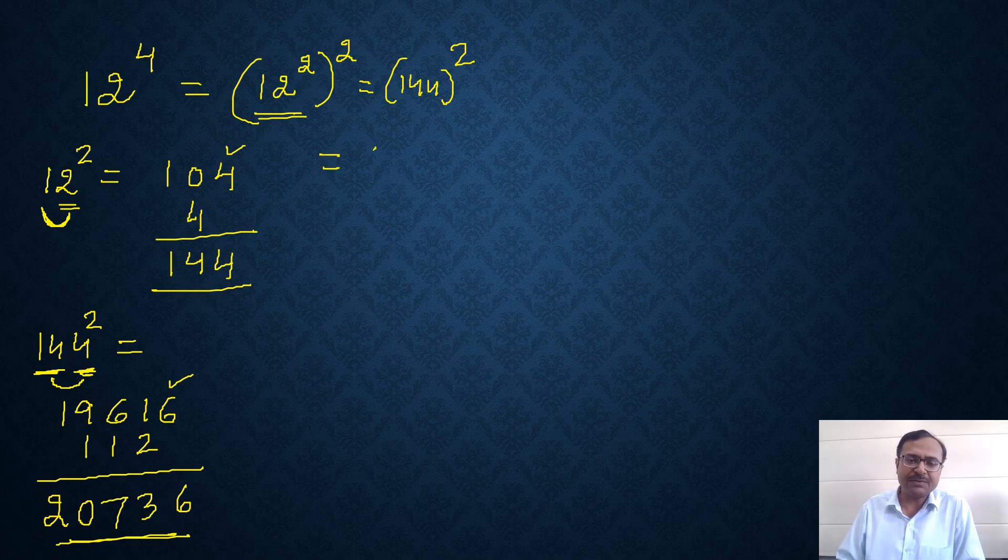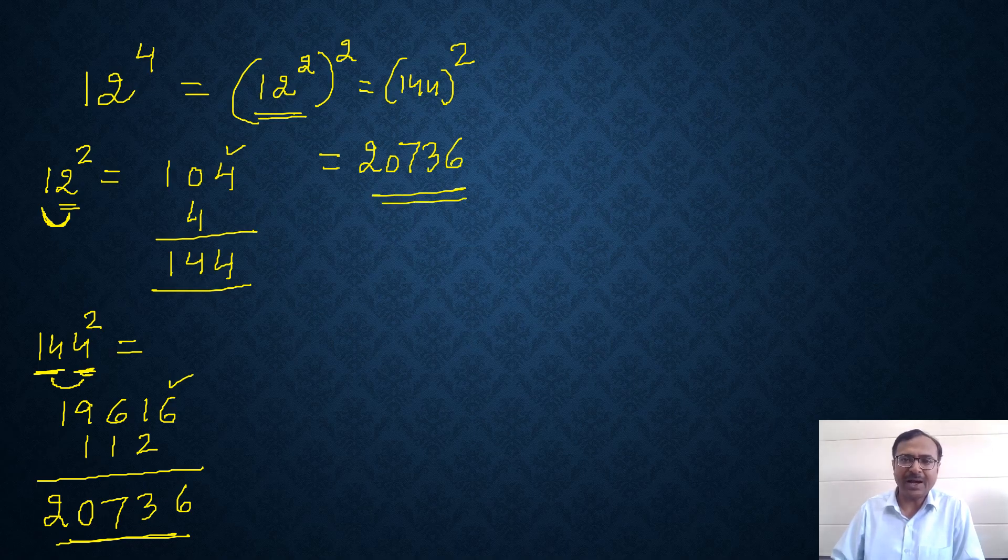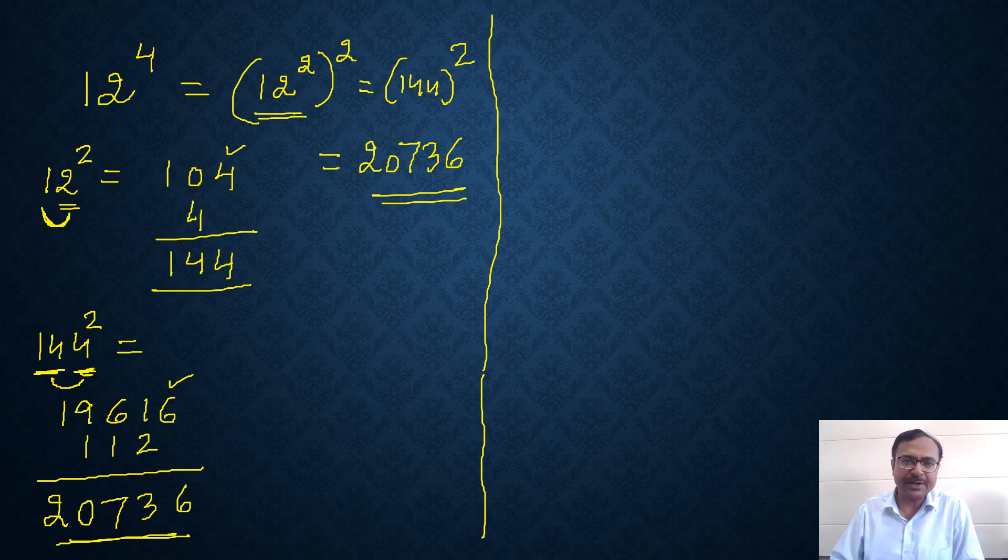Now pick up your calculators friends, just check. 12 raised to power 4, the answer will be 20736. I know you might think traditional multiplication is far better than this, but I tell you if you practice like 30-40 such questions, you are going to develop that speed which is unique.